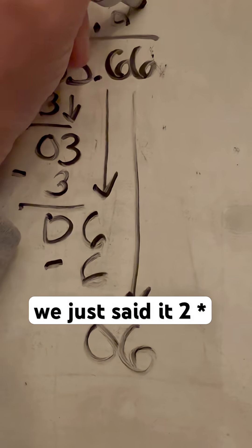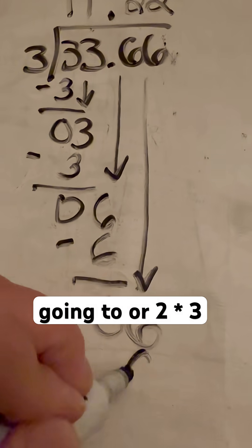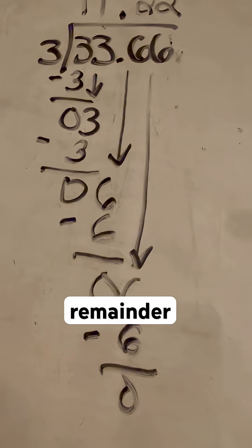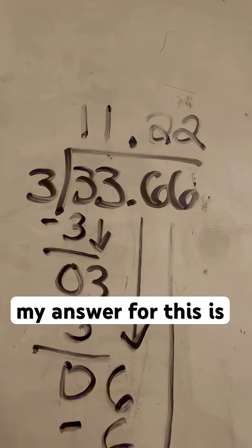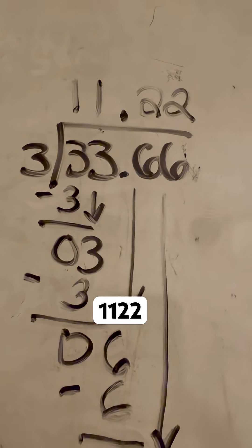And obviously we just did it. 2 times 3 is going to give me 6, remainder of 0. So my answer for this is 11.22.